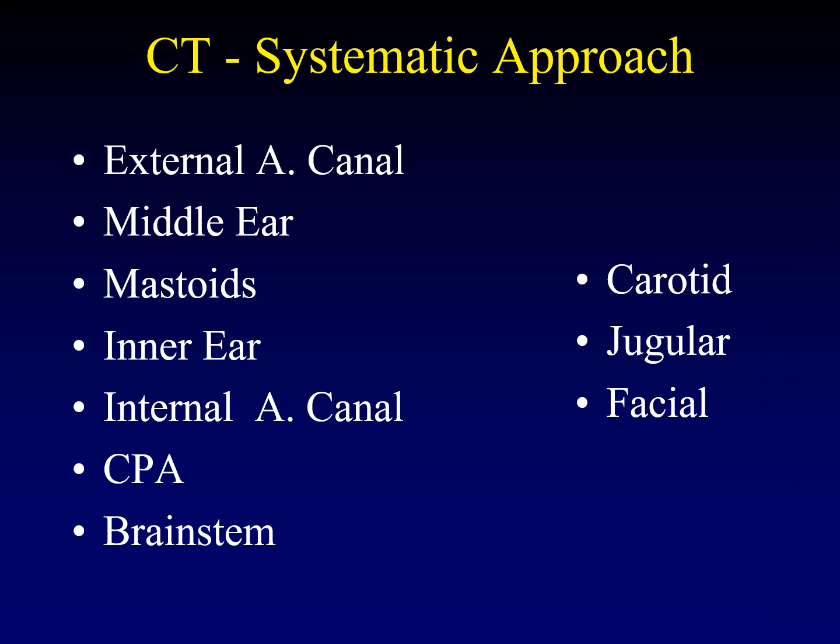When interpreting CT of the temporal bone, it's important to have a systematic approach. I like to work from the outside in: starting with the external auditory canal, moving to the middle ear and mastoid air cells, then the inner ear, continuing medially to the internal auditory canal, the cerebellar-pontine angle, and even evaluating the brain stem — those last two are best done on soft tissue kernels. Then I go back and look at particular structures: the carotid artery, the jugular vein and jugular bulb, and the facial nerve.